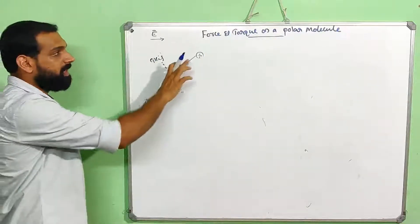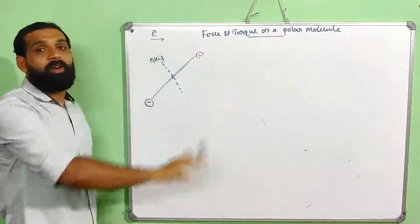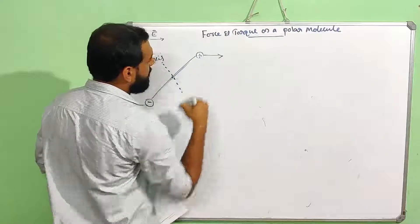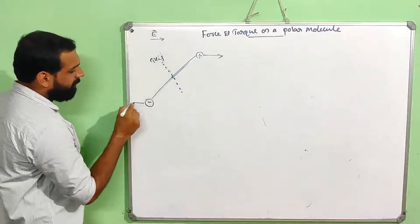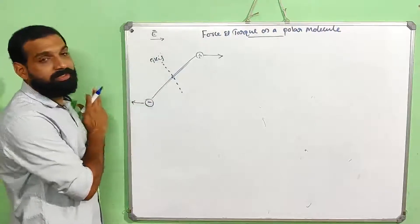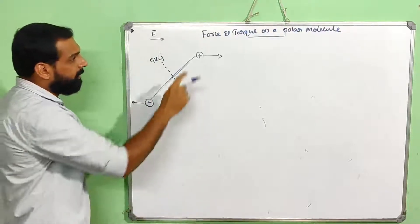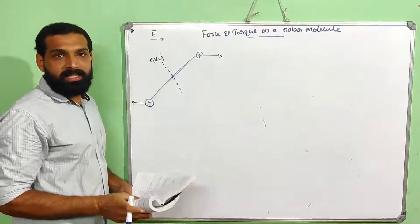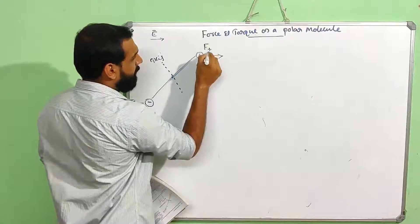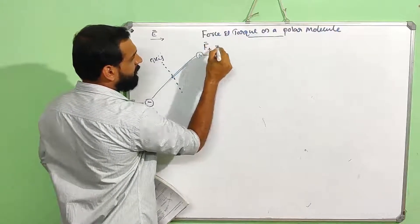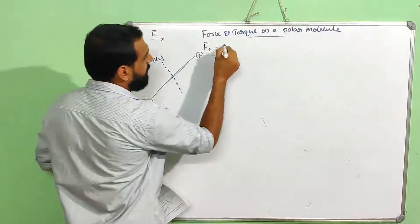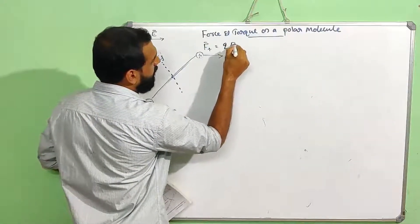What force does the positive charge experience? It moves along the electric field. The positive charge force is F plus. F plus is the force experienced by the positive charge. I can write it as F equal to QE — charge into electric field. That is the first force.